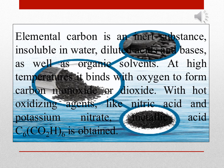Elemental carbon is an inert substance, insoluble in water, diluted acids and bases, as well as organic solvents. At high temperatures, it binds with oxygen to form carbon monoxide or dioxide. With hot oxidizing agents like nitric acid and potassium nitrate.